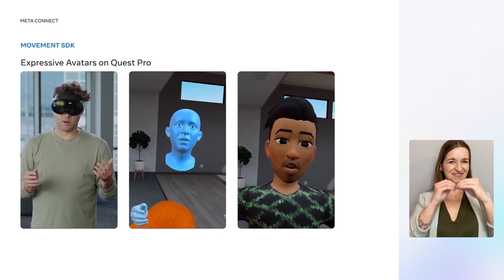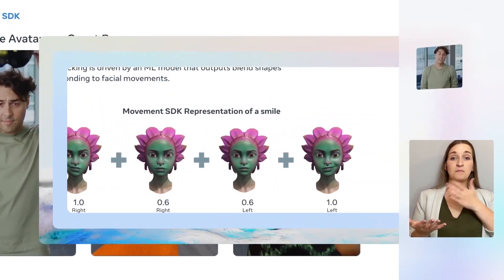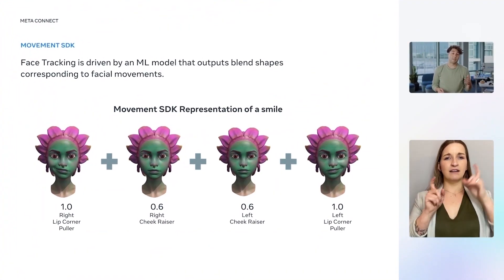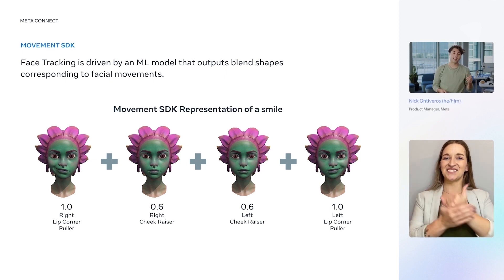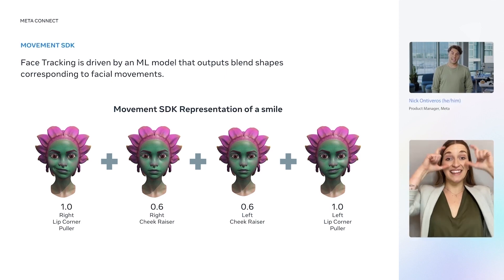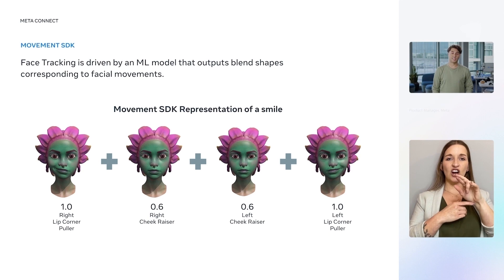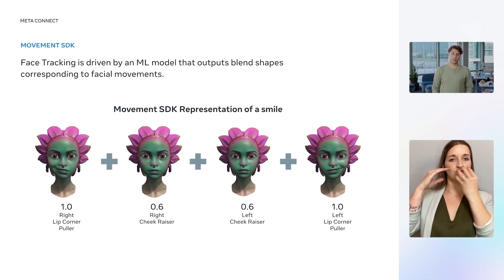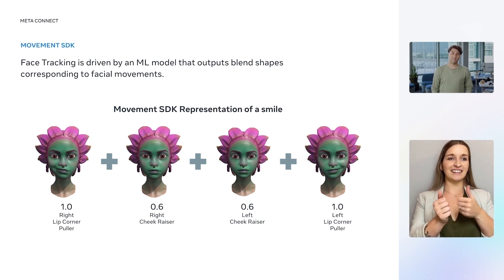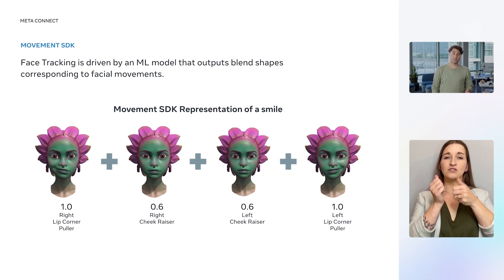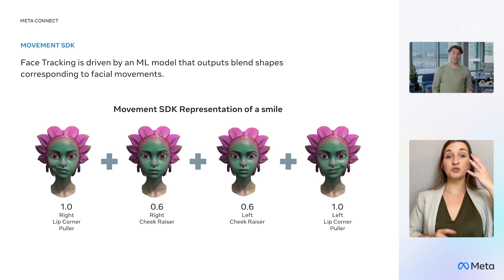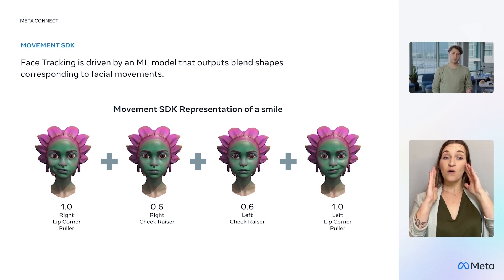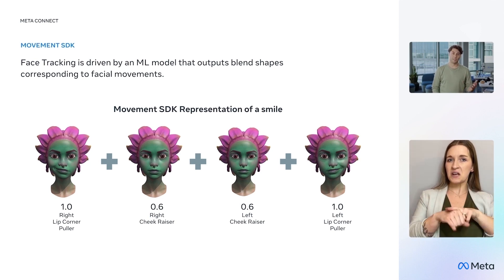Now, let me tell you a little more about how it all works. To give my character the capability to mimic my authentic gestures and expressions, we added a lot of new technology to MetaQuest Pro. Inside the headset, there are five IR sensors directed towards the face. Three sensors pointed towards the eyes and upper face, and two pointed towards the lower face. Face tracking is driven by an ML model, which allows the MetaQuest Pro to track a wide range of facial movements. While our users will want their avatars to appear expressive, it's also important that they feel natural, and we hope that developers building embodied characters on top of face tracking will feel the same.